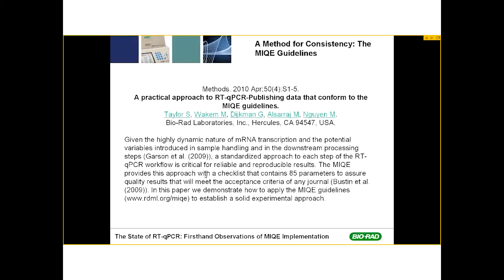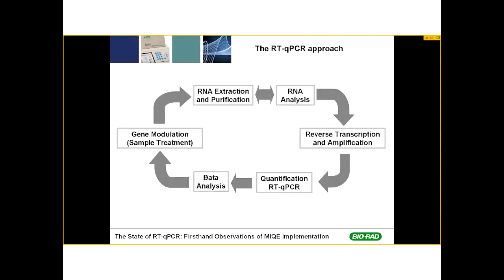Let me walk you through experimental design for a qPCR experiment according to this recent publication. Designing a qPCR experiment involves several steps, particularly for a gene expression experiment. We start with sample treatment, followed by RNA extraction and purification, RNA analysis, reverse transcription to convert RNA to cDNA, and then the qPCR step on the cDNA. Data are analyzed using the delta-delta-CT method, normalized to at least two or three reference genes, before cycling back to sample treatment for subsequent experiments.